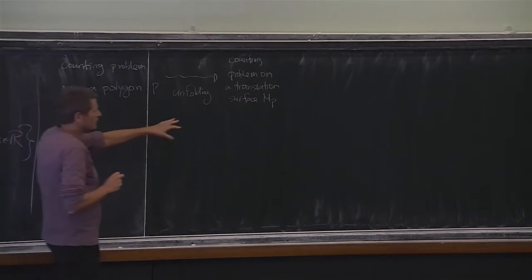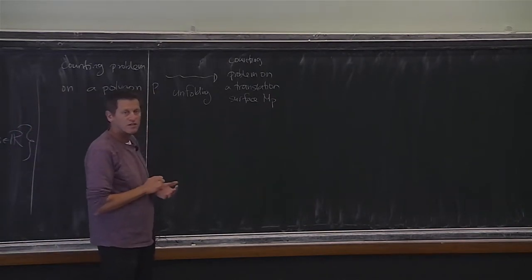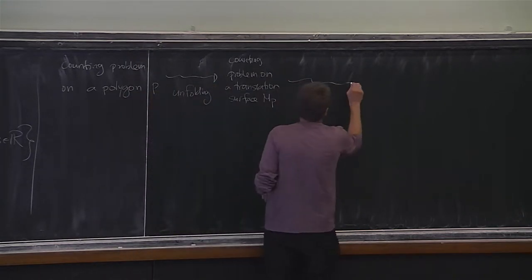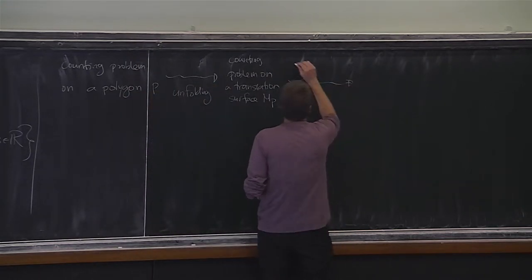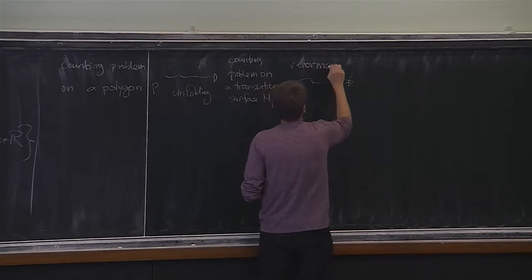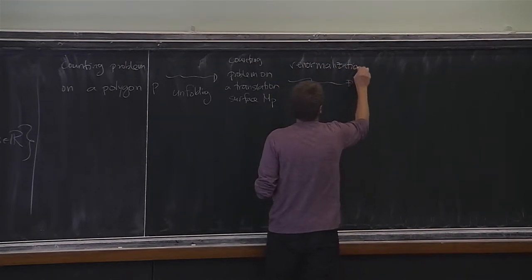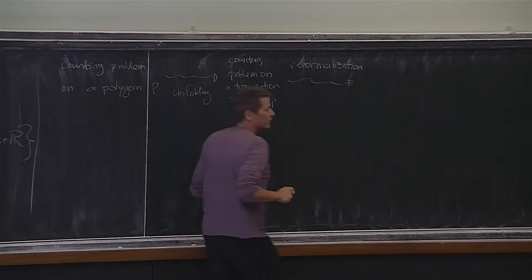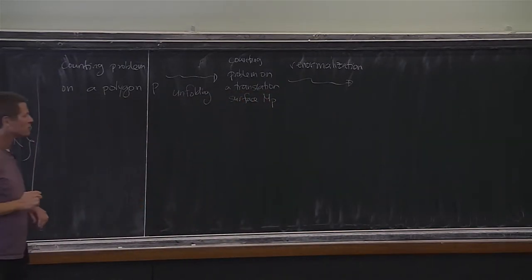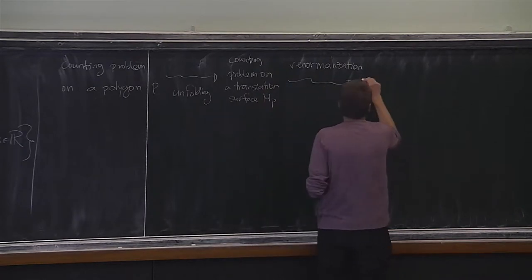It's a particularly symmetric kind of translation surface. By a further argument—the fascinating one, in my opinion—that goes under the name of renormalization, we arrived at an equidistribution problem on a moduli space.